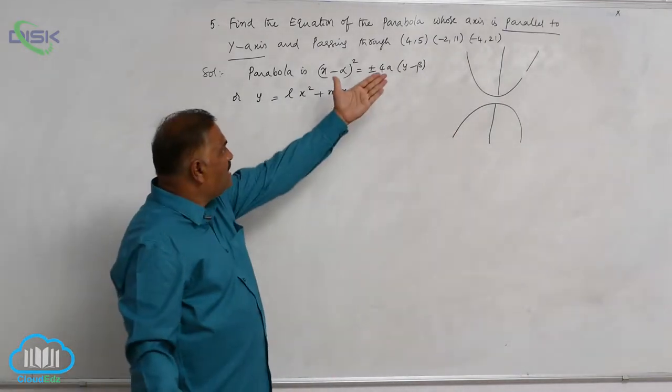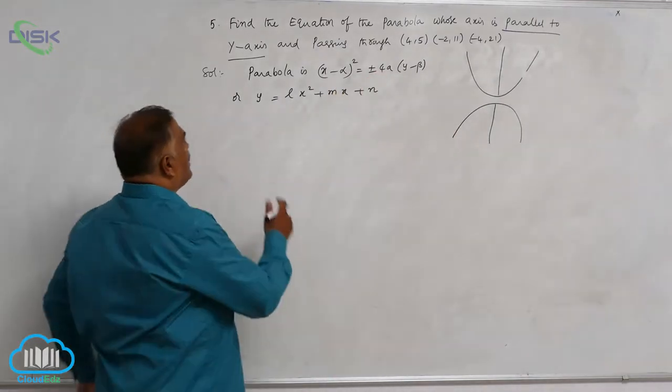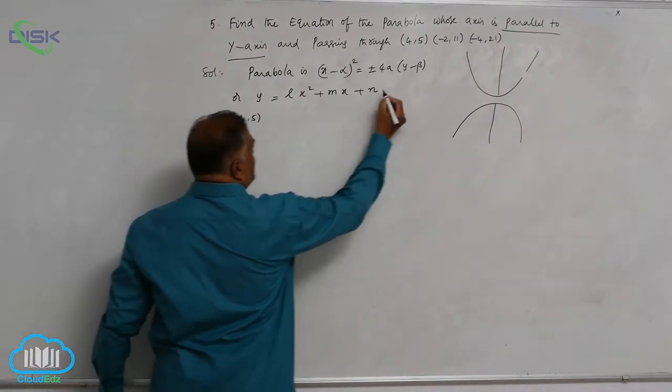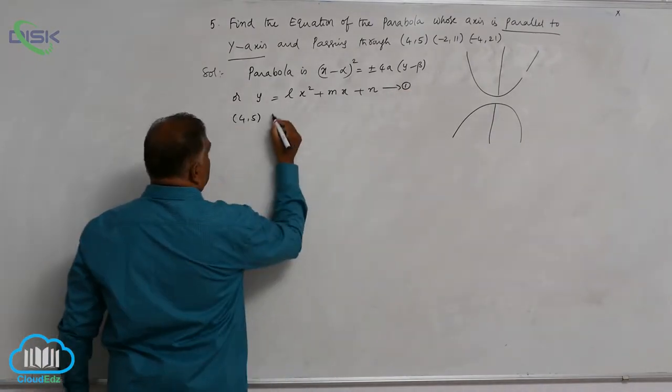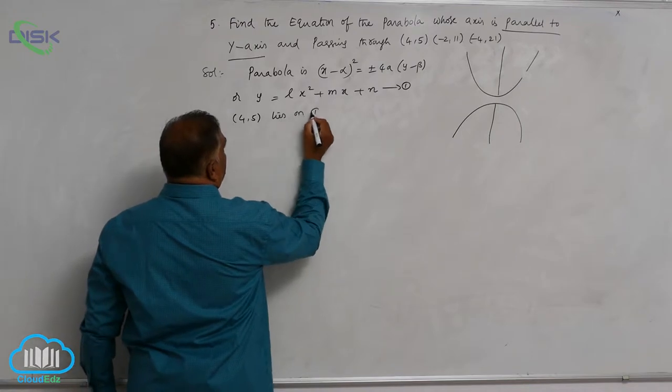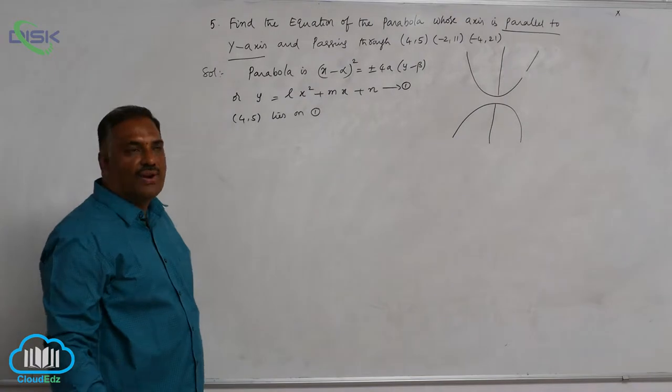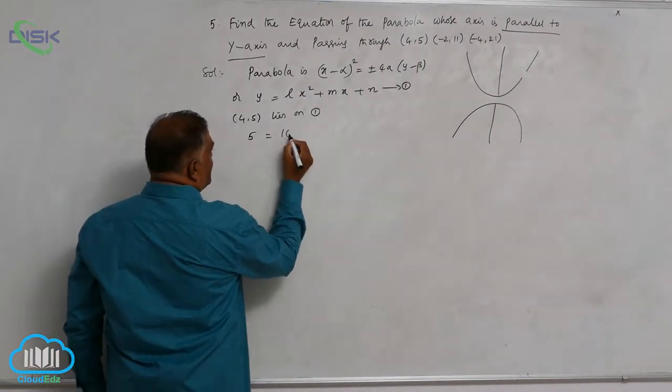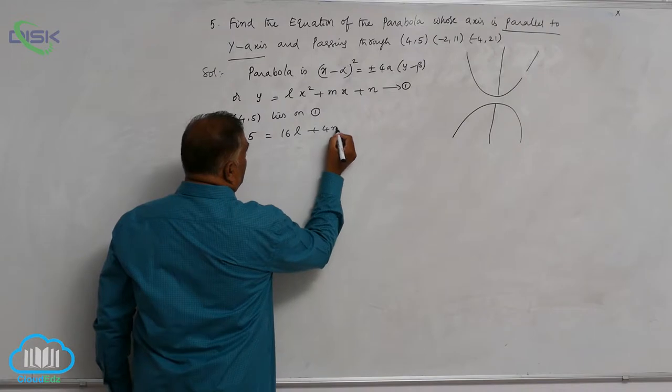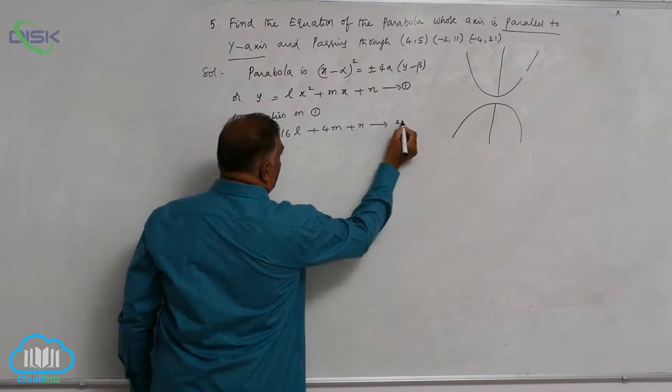Let us claim all these points lie on the curve. (4,5), call it as equation 1, lies on 1. So in place of x, let us substitute 4, in place of y, 5. So 5 is equal to 16l plus 4m plus n, equation 2.